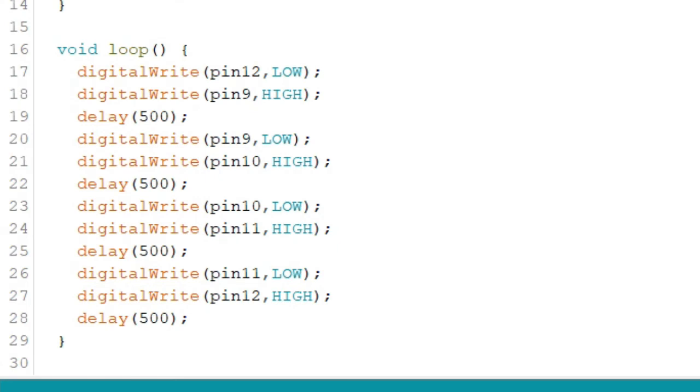As this goes on in a loop, after the last LED, which is pin 12, is turned on, it will be turned off once the loop starts again. Because this is actually the first statement we write inside the loop function. We can play around with the delay function to make it run slower or faster.